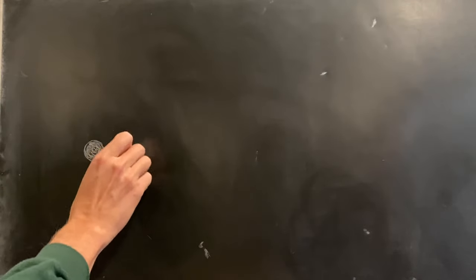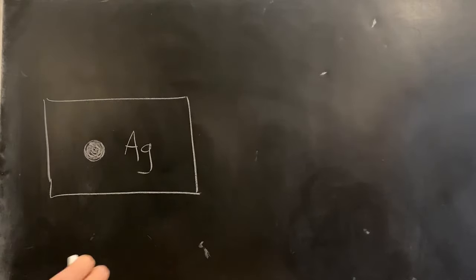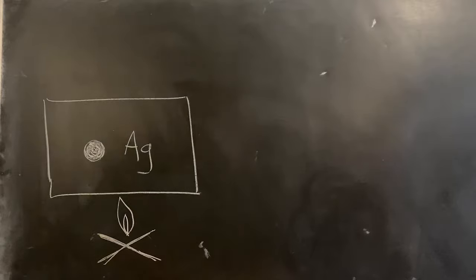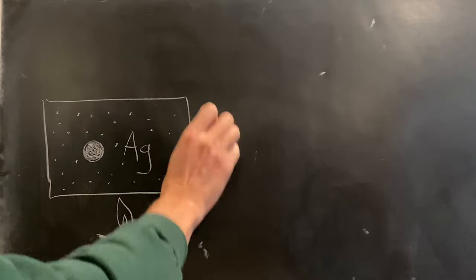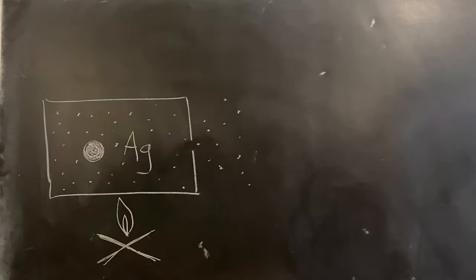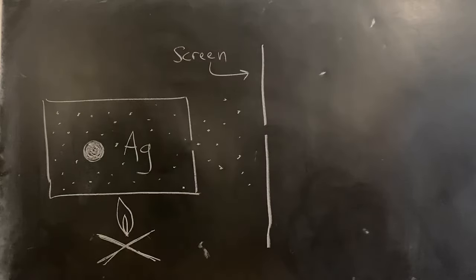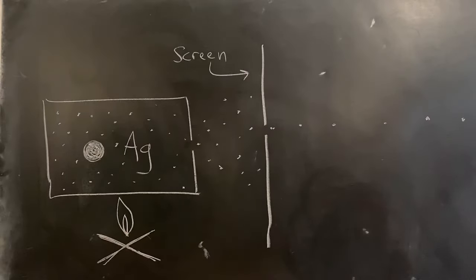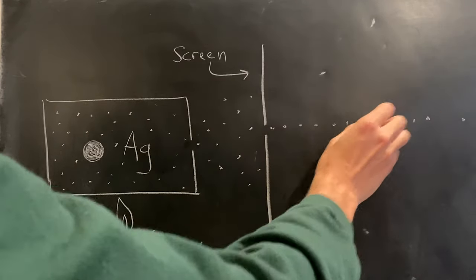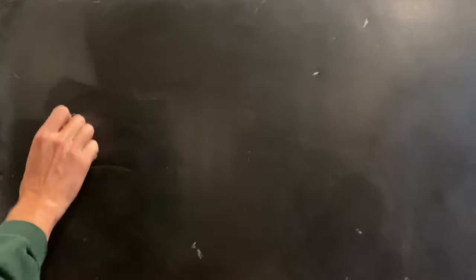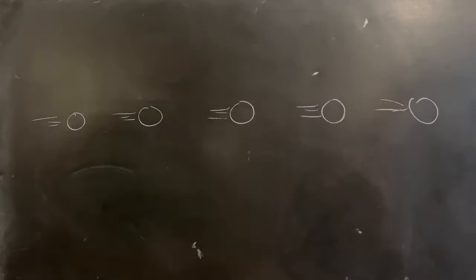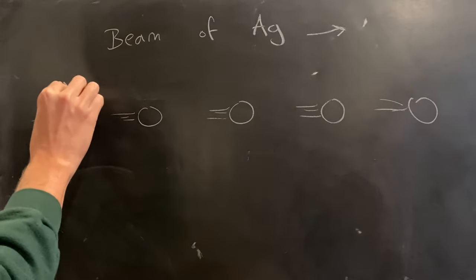To get a beam of silver atoms, the first thing you do is take a chunk of silver, put it in a metal box, and heat that box up like an oven so that the individual atoms sublimate off of the lump, forming a gas. You can then poke a pinhole in the side of that box, causing the silver atoms to spray out like a nozzle. You can then put a screen with another pinhole next to that hole, creating a collimated beam of individual silver atoms. Coming out of the oven, the individual beam of silver atoms have spins pointing in any which direction.